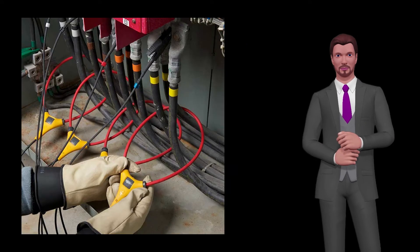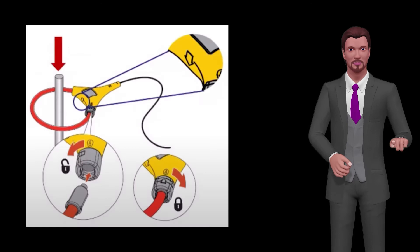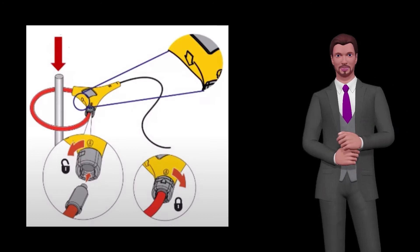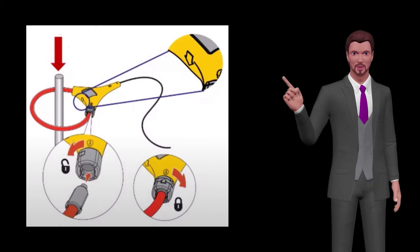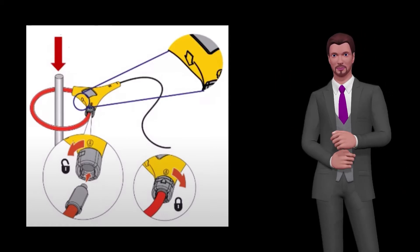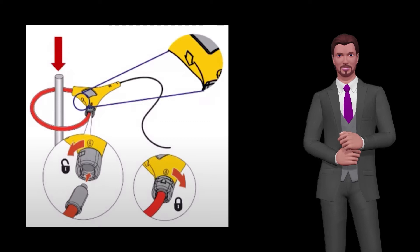First, install the current probes on the cables and look at the arrow that is printed on them, which should point towards the loads. If you put them pointing towards the transformer, the power and energy associated with that phase will surely come out with a negative sign, which makes the total power and energy incorrect. Verify that their hooks are properly closed.